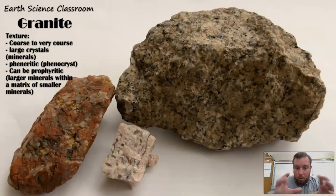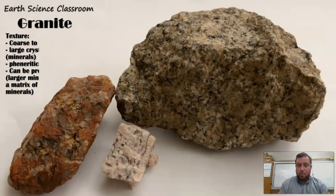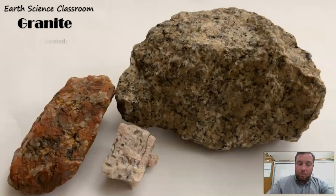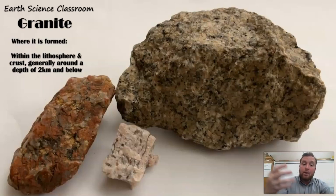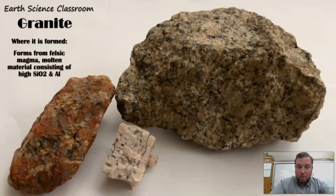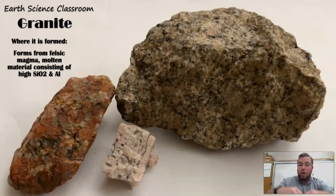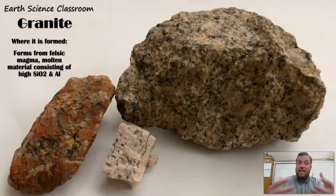Granite forms in certain areas — closer to the surface, around two kilometers under and upward — because it contains elements that are lighter and more abundant towards the upper mantle, lithosphere, and crust. Elements like silica, oxygen, sodium, and calcium are found there. The heavier iron and magnesium, which are more mafic, are deeper down. When magma is close to the surface, it incorporates and melts surrounding rock, generating more granitic and felsic magma that eventually cools to form granite.